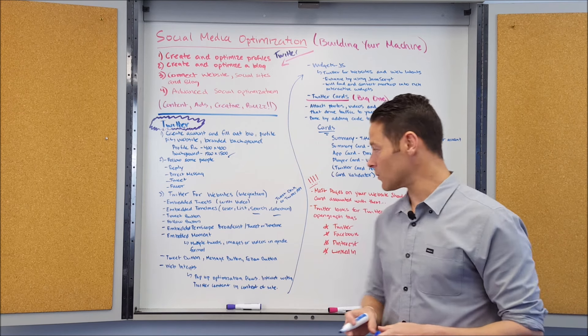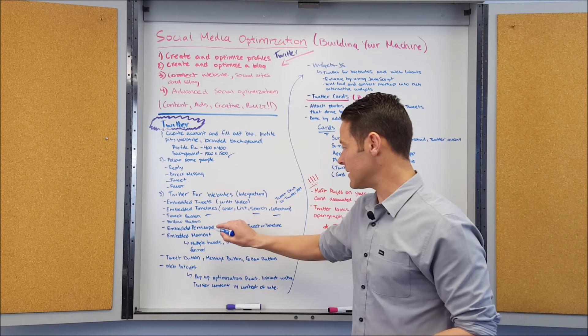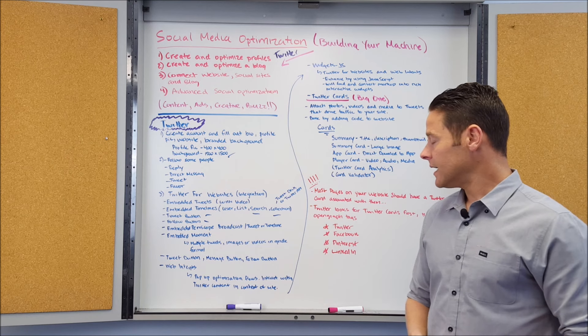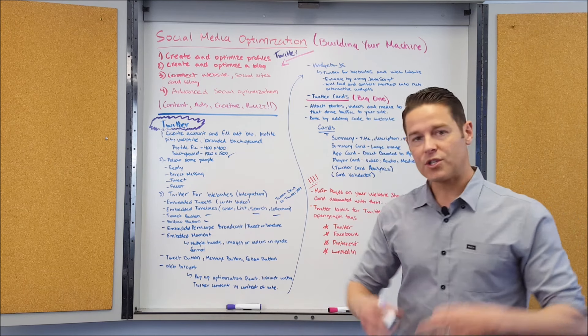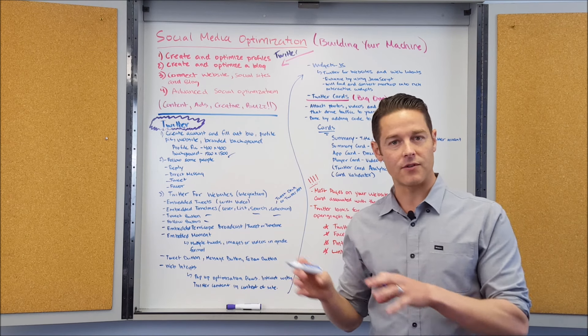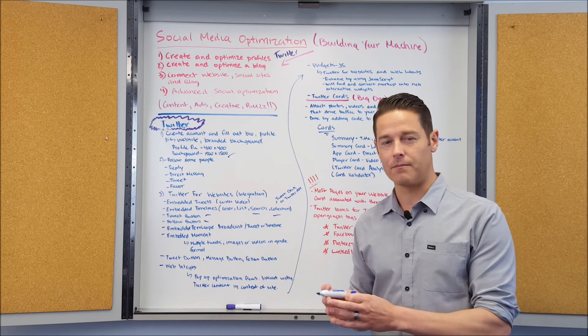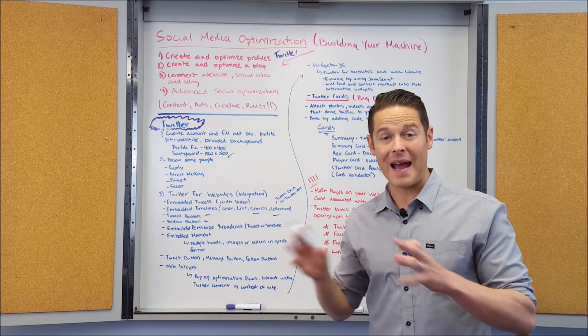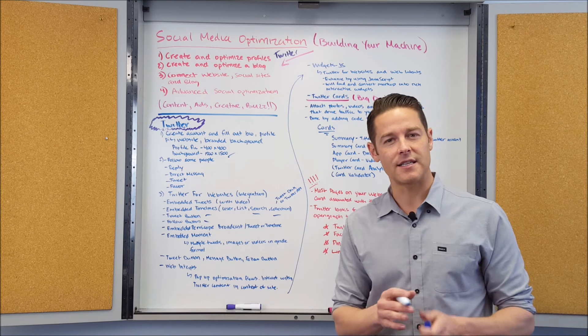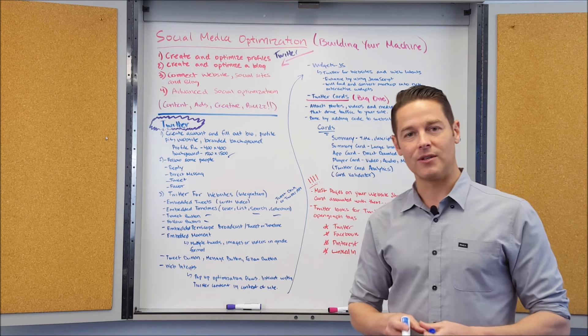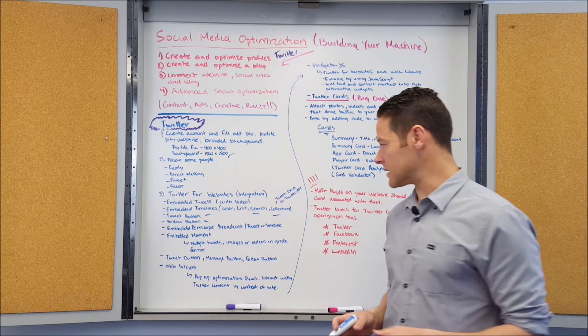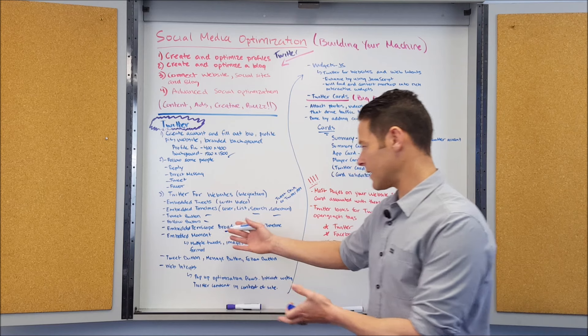There's of course the tweet button that allows you to tweet content and the follow button that allows you to follow somebody on Twitter. With all this stuff, you really want to think about what's your overall Twitter optimization strategy—how are you going to be utilizing these individual things on your site? For big news sites, this can really just bring a massive viral impact to your site. For other sites that aren't as inclined to have success on Twitter and there aren't as many people talking about the individual things, there won't be as big of an impact.